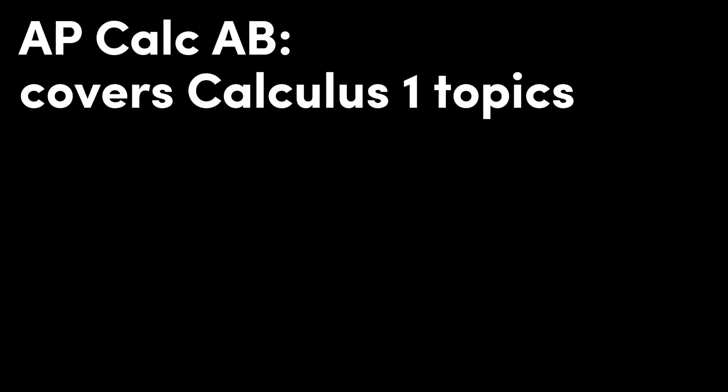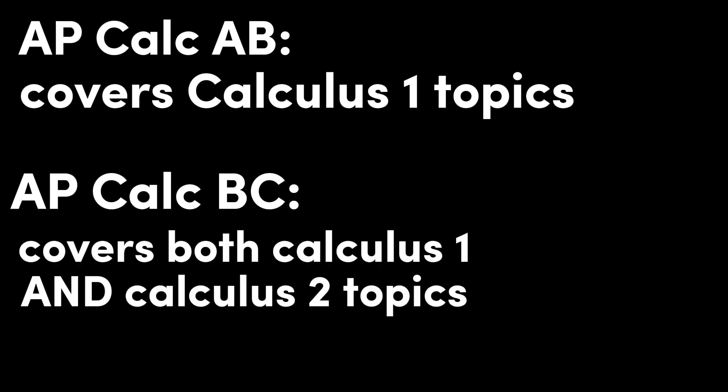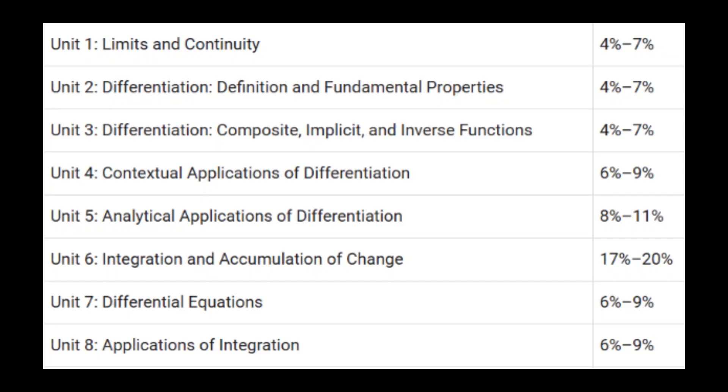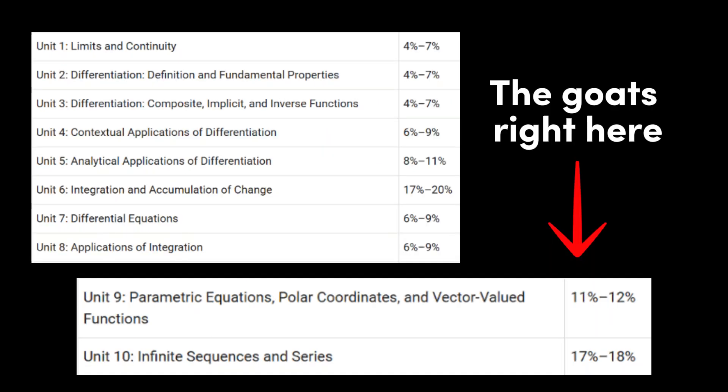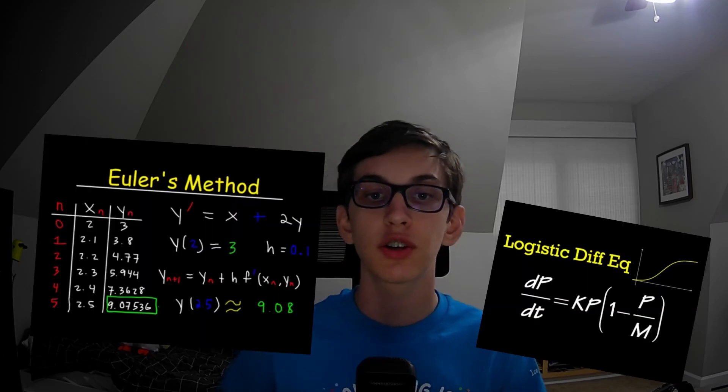So many of you probably know that AP Calc AB covers Calculus 1 topics, while Calc BC covers both Calculus 1 and Calculus 2 topics. This means that Calc BC covers all of the AB topics, plus a whole other class worth of topics. Here we can see the 8 units that AB and BC both have in common, and then there's 2 extra units that add on to BC. What some of you may not know is that Calc BC also sprinkles in some Calculus 2 topics throughout units 1 through 8 — topics like Euler's Method, Logistic Differential Equations, and many more.